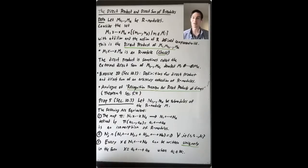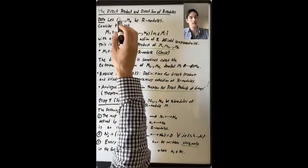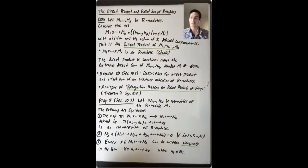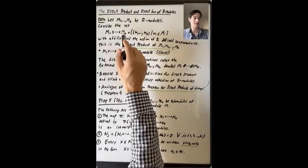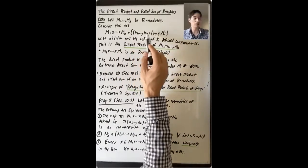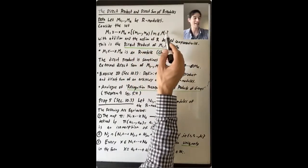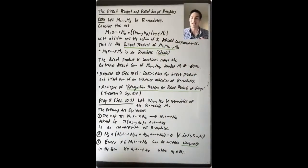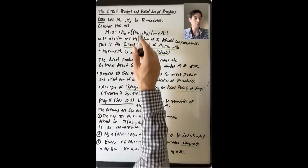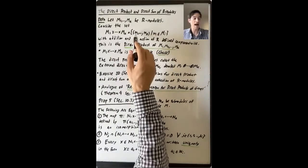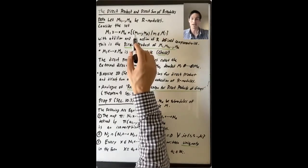We'll begin this lecture by talking about direct products and direct sums of R-modules. Let's say that M1 up through Mk are R-modules. We'll consider the set M1 cross M2 cross ... cross Mk, which will be all the tuples (m1, m2, ..., mk), where each m_i is in the R-module M_i. This is a set, but we can also give it component-wise addition and define an action of R on this set by having R act on each component individually.